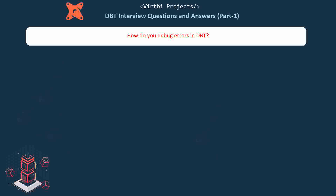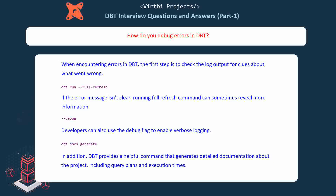How do you debug errors in dbt? When encountering errors, the first step is to check the log output for clues about what went wrong. If the error message isn't clear, running the dbt run full refresh command can sometimes reveal more information. Developers can also use the debug flag to enable verbose logging. Additionally, dbt provides a dbt docs generate command that generates detailed documentation about the project, including query plans and execution times.